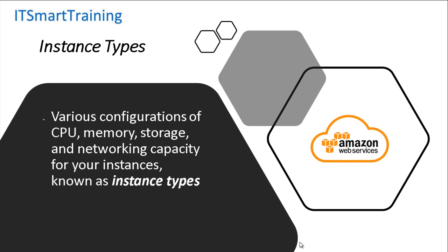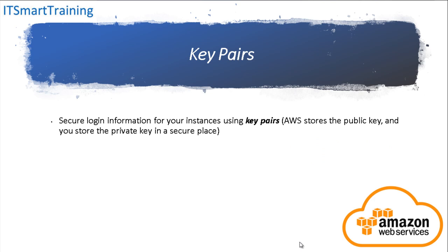Next is Key Pairs — secure login information for your instances using key pairs. AWS stores the public key and you store the private key in a secure place. When we log in to a particular instance, we have to provide that private key. When we provide the private key and that information is decrypted by AWS, only then can we log in to our server. So there is a high level of security given to login.